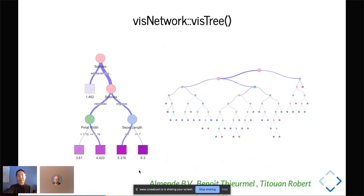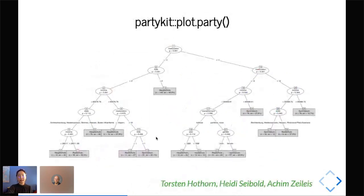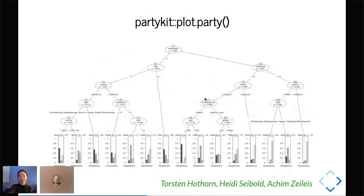Plot party function from PartyKit is great because not only it shows you the feature name, it also shows you the corresponding p-value. That shows how important that feature is in predicting the final outcome. At the leaf node here, it shows you the number of samples in that leaf node and the error corresponding with it. You can even draw histograms at the leaf node.